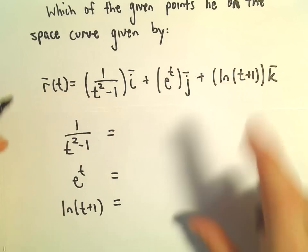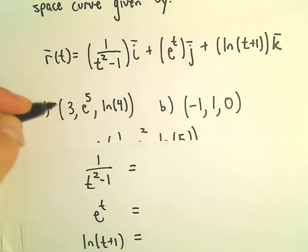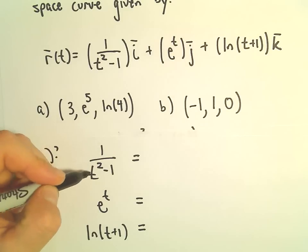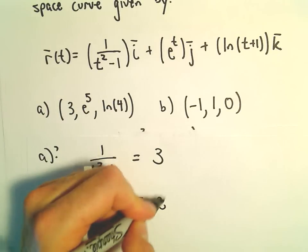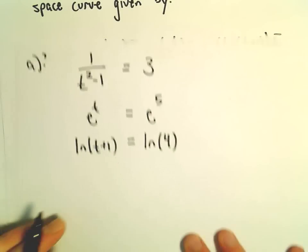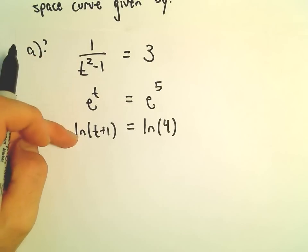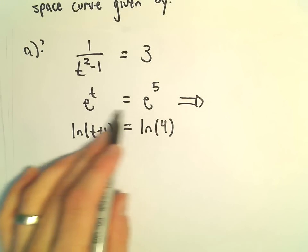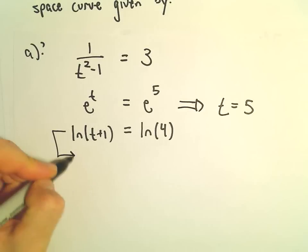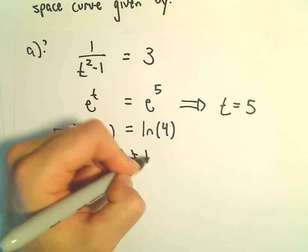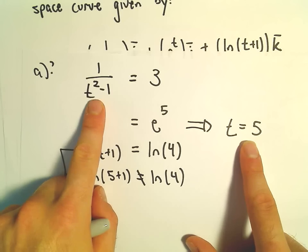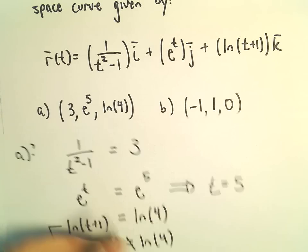The idea is there must be some value of t that satisfies all equations simultaneously. So does part a work? If it is correct, there's some value of t that will make 1 over t squared minus 1 equal 3, e to the t equal e to the 5th, and the natural logarithm of t plus 1 equal ln 4. Looking at the second equation, the solution would have to be t equals 5. But if you plug t equals 5 into the bottom one, we'll have ln(5+1), which is definitely not ln 4. And plugging 5 into 1 over t squared minus 1 won't give 3 either. So the first point is not on the curve.